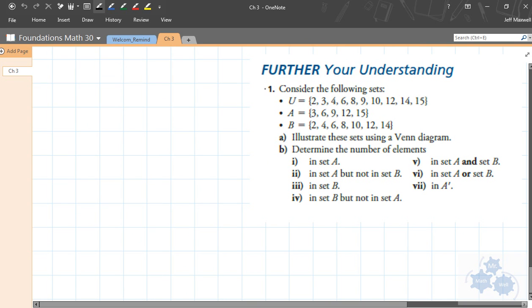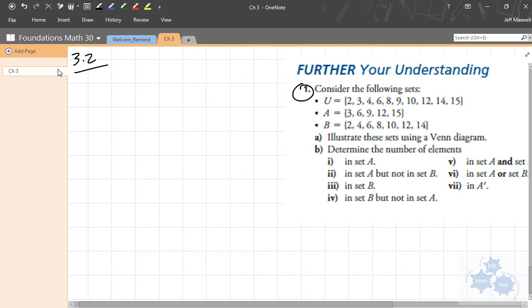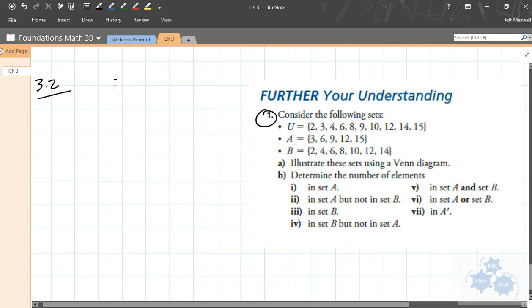So here's question number one from your assignment. This is from 3.2, so I'll just kind of get you started by doing that with you. So number one says, consider the following sets. U, the universal set, so all the numbers that we're considering: 2, 3, 4, 6, 8, 9, 10, 12, 14, and 15. Set A is 3, 6, 9, 12, 15. And set B is 2, 4, 6, 8, 10, 12, 14. A says, illustrate these sets using a Venn diagram.